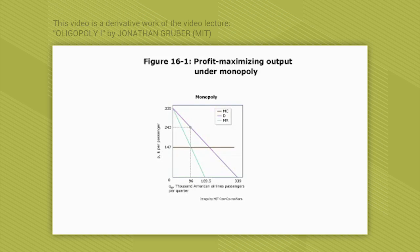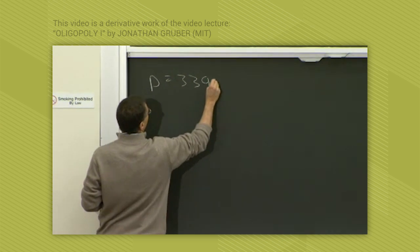Now imagine, let's say that the demand curve in this market, in our example we're going to do, let's say that the demand curve is of the form P equals 339 minus Q.